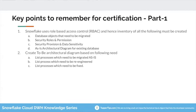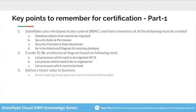List processes which need to be fixed — there are areas in your legacy system which need to be fixed, and during this migration you would like to fix them. Deliver faster value to the business: Snowflake is a pay-as-you-go SaaS platform, and your business is funding this platform because you want to get value out of it. What Snowflake itself recommends is to avoid a single big bang approach and use an incremental delivery approach.